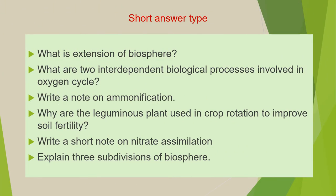The next category is short answer type questions, to be answered in a single paragraph. First question: what is the extension of biosphere? Next: what are the two interdependent biological processes involved in the oxygen cycle? Next: write a note on ammonification. Next: why are leguminous plants used in crop rotation to improve soil fertility? Next: write a short note on nitrate assimilation. Next: explain the three subdivisions of biosphere.